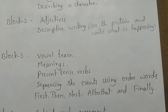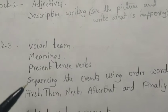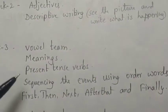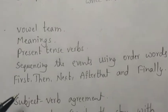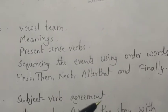Now block 3. Oval team. Meanings you have to learn. Present tense verbs you have to learn. Sequencing the events. Using order words like first, then next, after that and finally.